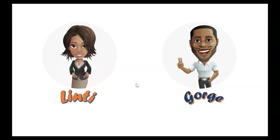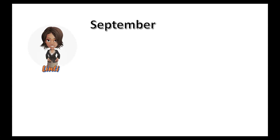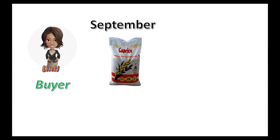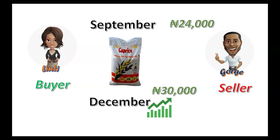This is Lindsey and George — they're going to help us understand what futures trading is. We're in Nigeria, and one of the most popular commodities bought in Nigeria, especially in December, is rice. Let's say we're in September. Lindsey wants to buy rice and the price of rice in September is 24,000. But Lindsey doesn't need the rice in September — she needs it in December. She's afraid the price of rice is going to shoot up to 30,000 in December, and she doesn't have money to buy the rice right now or storage space to store it. So she goes to George, who is a rice seller.